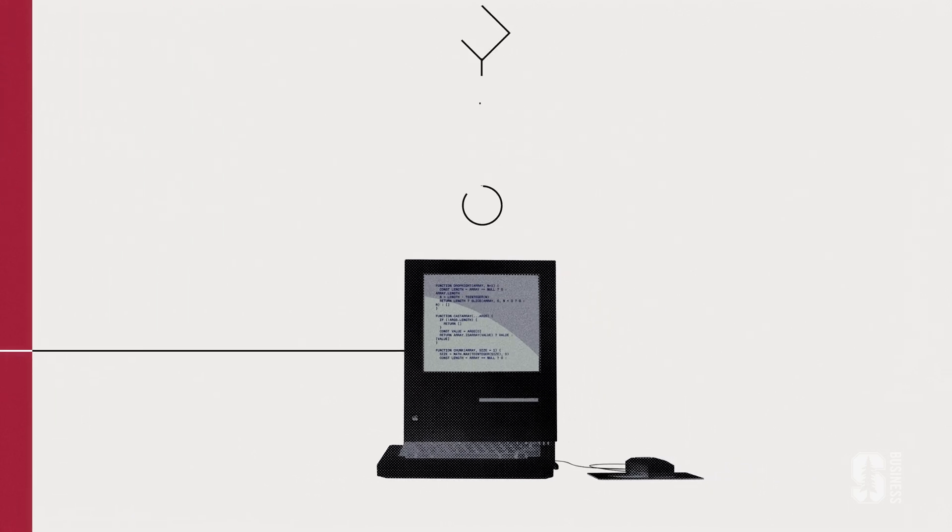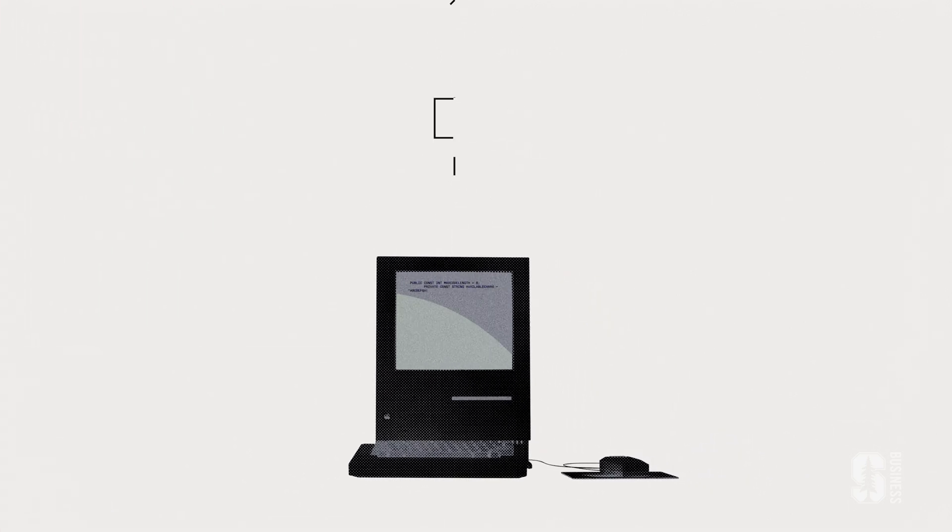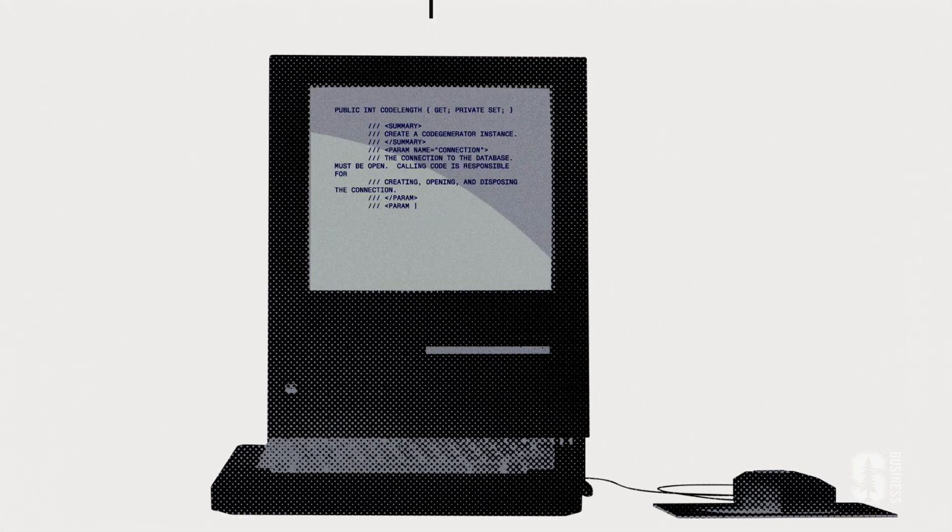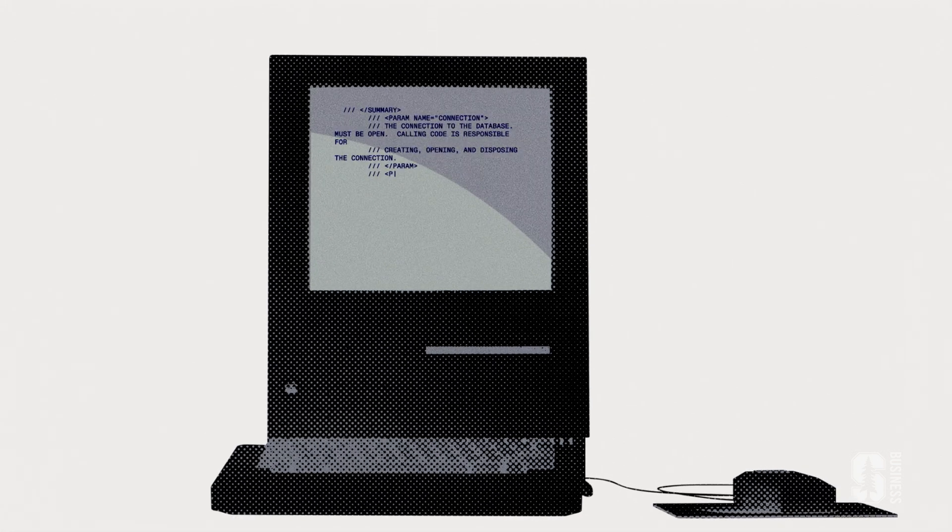When we program computers, we're giving them instructions for all the possible paths they might need to take, stemming from all the possible series of events that might occur in a particular process.